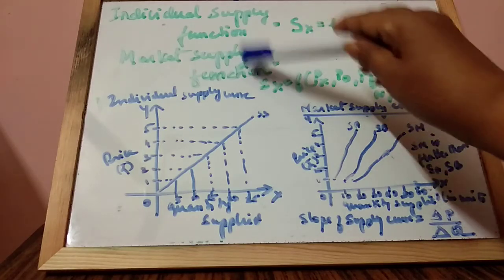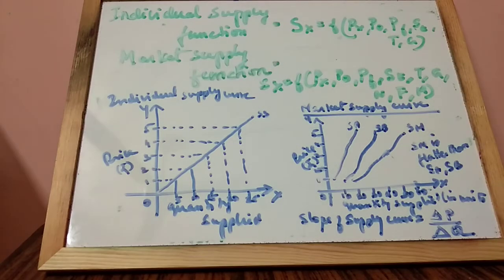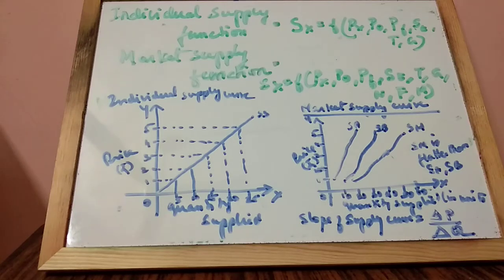Next, market supply function. That refers to the functional relationship between market supply and the forces and factors affecting the market supply of a commodity.